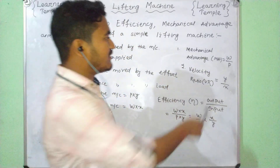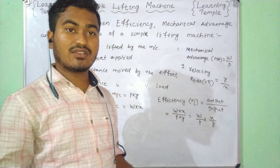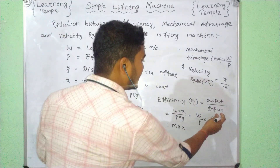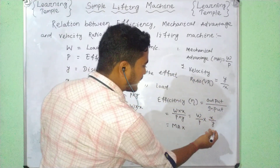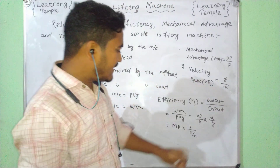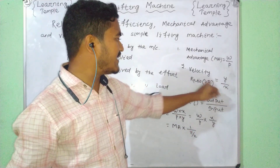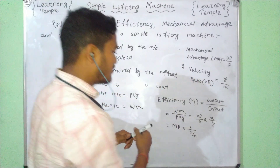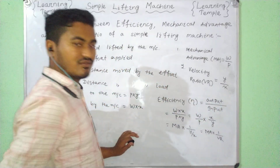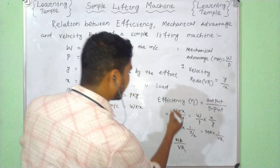Mechanical advantage. So, this is mechanical advantage, which is x divided by y. This is 1 divided by y over x. So this is x divided by y, and x divided by y over x is the same as the velocity ratio.